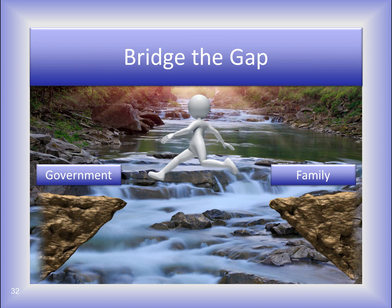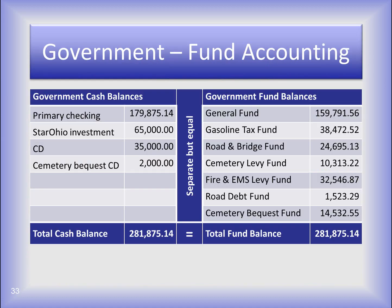So how do we bridge the gap between understanding a family's cash and budget to learn how the government's cash and budget operate? Here's a snapshot of a sample township's bank accounts and funds. On the left are the bank accounts: a primary checking, Star Ohio investment, a CD as an investment, and a cemetery bequest CD. On the right side are their funds and cash balances. Notice the total cash balance is equal to the total fund balance, but none of the fund balances match a specific bank account. Remember, you don't have to have separate bank accounts for funds — only in very rare occasions to satisfy a trust, contract, or agreement.